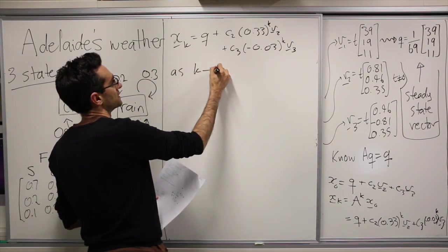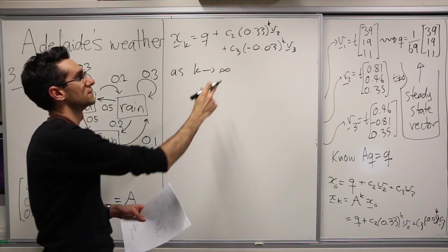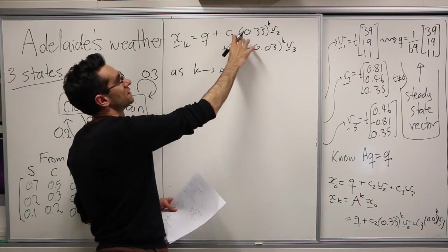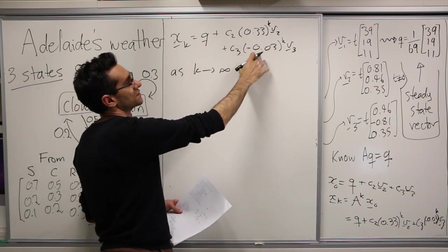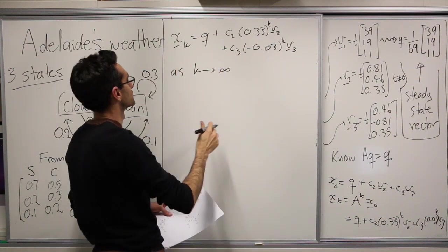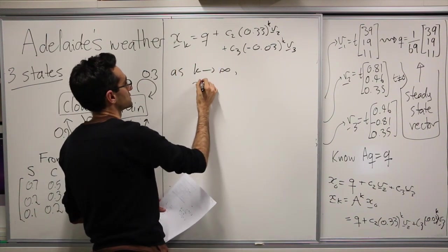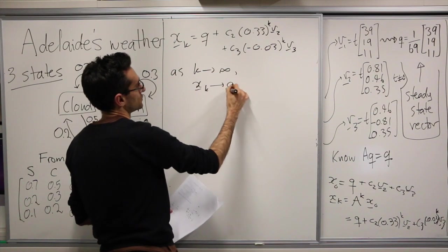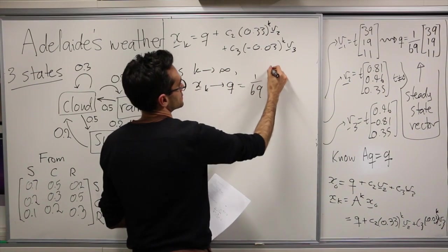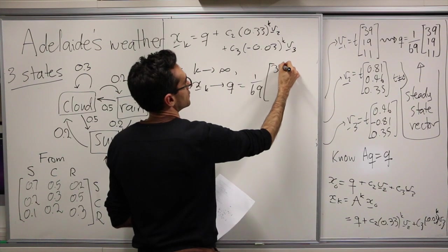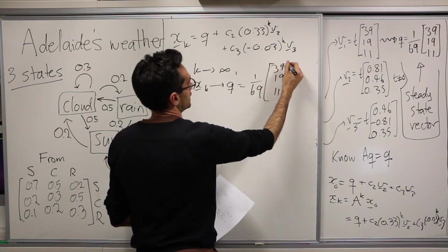So as k gets very large, then these two terms are smaller than 1, these two coefficients here in magnitude, and so they're going to get smaller and smaller. So xk will approach q, which is 1 over 69 times [39, 19, 11].